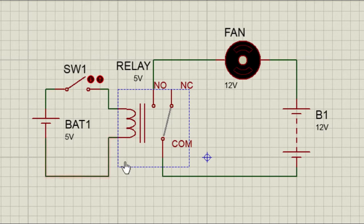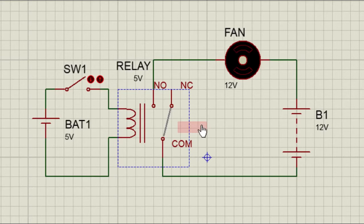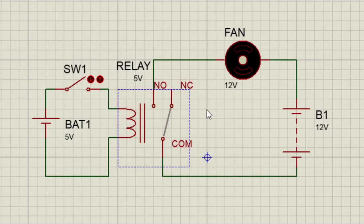The next parameter to consider when selecting a relay is the contact ratings. These ratings apply to the high-voltage and current terminals of the relay. The commonly used contact ratings are the maximum voltage and current it can handle continuously. If for example a relay is rated 220 volts 16 amps, it means it can handle up to 220 volts and a maximum load current of 16 amps. No device with higher voltage or current ratings than the relay should be connected to it, otherwise it could be damaged.